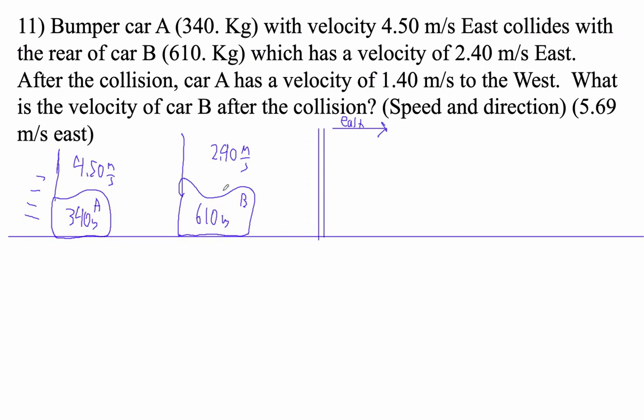So this guy's going to the east, right? And then after the collision, car A is going to the west. That's me. Wow, that's quite the collision. So I bump off the back of him and I end up going west. So let's draw a picture of that. I'm now going to the west at 1.4, so I'm going to make that negative 1.40 because that's to the west. This is bumper car A, 340 kilograms.